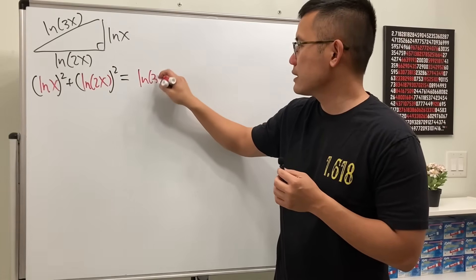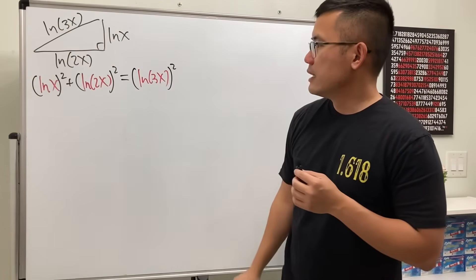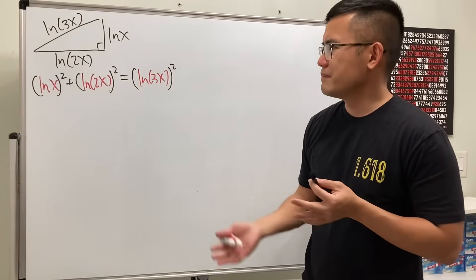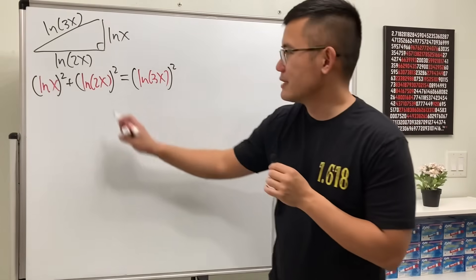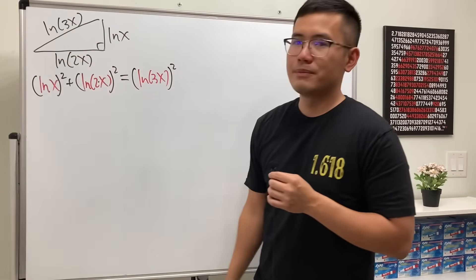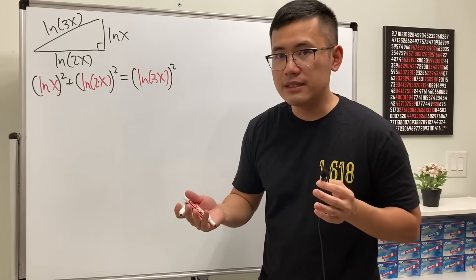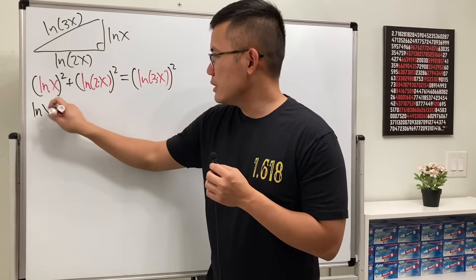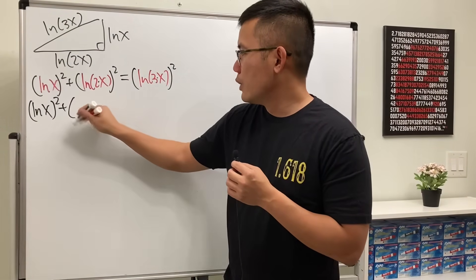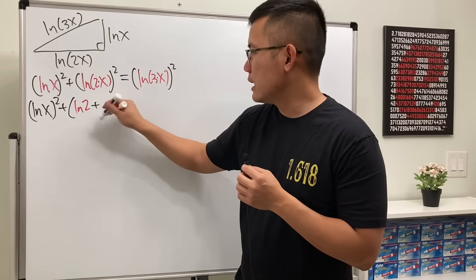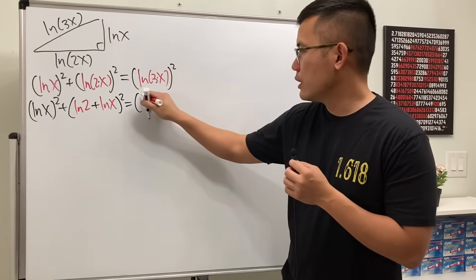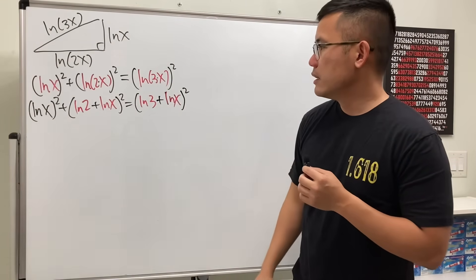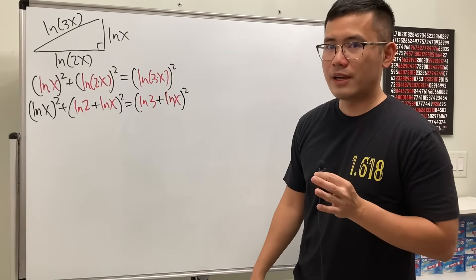There's a small problem: the inputs are x, 2x, and 3x — all different — so we can't do too much directly. But don't worry: ln(2x) is ln(2·x), and thanks to the log product property, we can break it apart as ln(2) + ln(x). Similarly for ln(3x). So now we have ln(x) squared, plus (ln(2) + ln(x)) squared, equal to (ln(3) + ln(x)) squared.